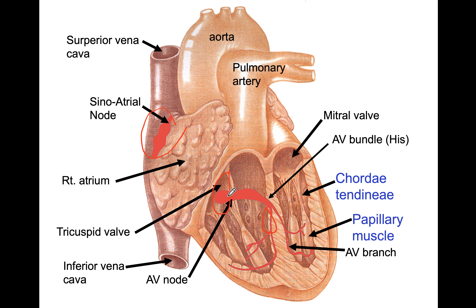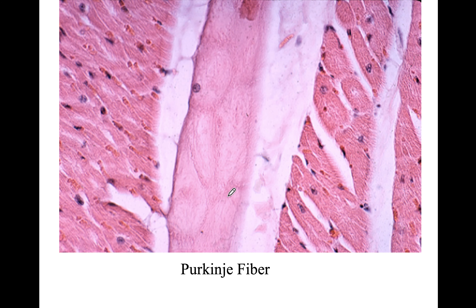Looking at the slide, we can see the Purkinje cells — there are no cross-striations because they have lost their fibrillar tissue. Because they lost their fibrillar tissue, they can no longer contract; instead their main function is signal transduction inside the heart.